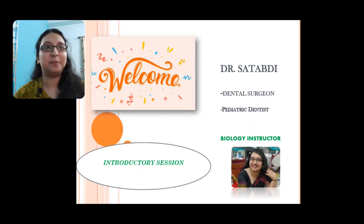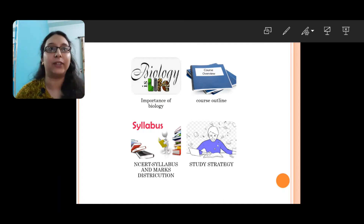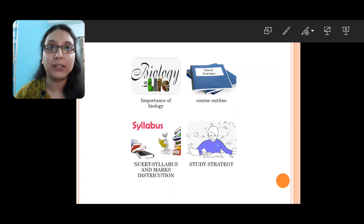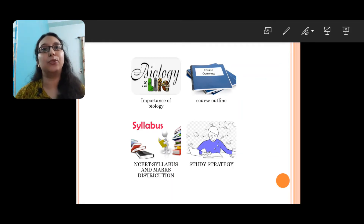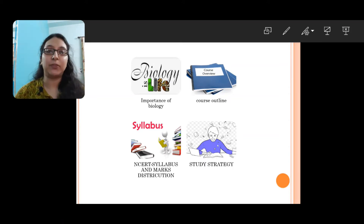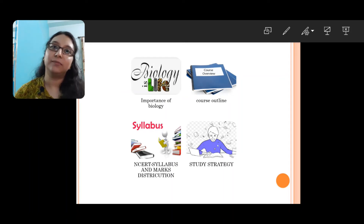So let's get started. This is our today's outline. First of all, we will know what is the importance of studying biology, which is especially important for class 11 and 12. Then we will look at the course outline, then go to the NCERT syllabus, and then we will see the class 11 and class 12 marks distribution chapter-wise, and which chapters' questions are coming in competitive exams. Last but not the least, we will learn how to study — the most effective study strategy.